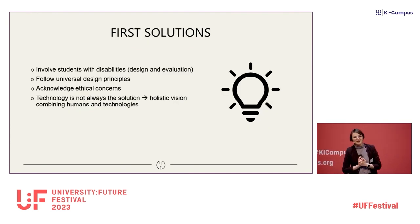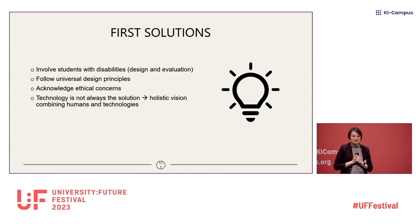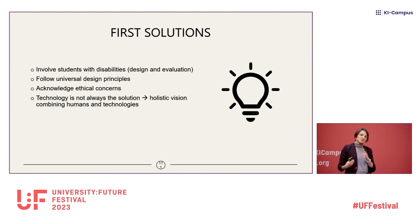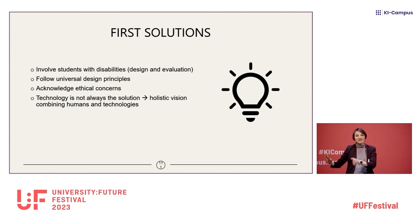So what can we do? I don't have the perfect solution, but here are some starting points. First, I would encourage you to involve students with disabilities both in design and evaluation — do not just wait for them at the end of the design process. If you are a developer, involve them from the start. If you are in higher education and want to buy new products, think first about assistive technologies and how to enable students rather than control them. This is also something that was discussed this morning.